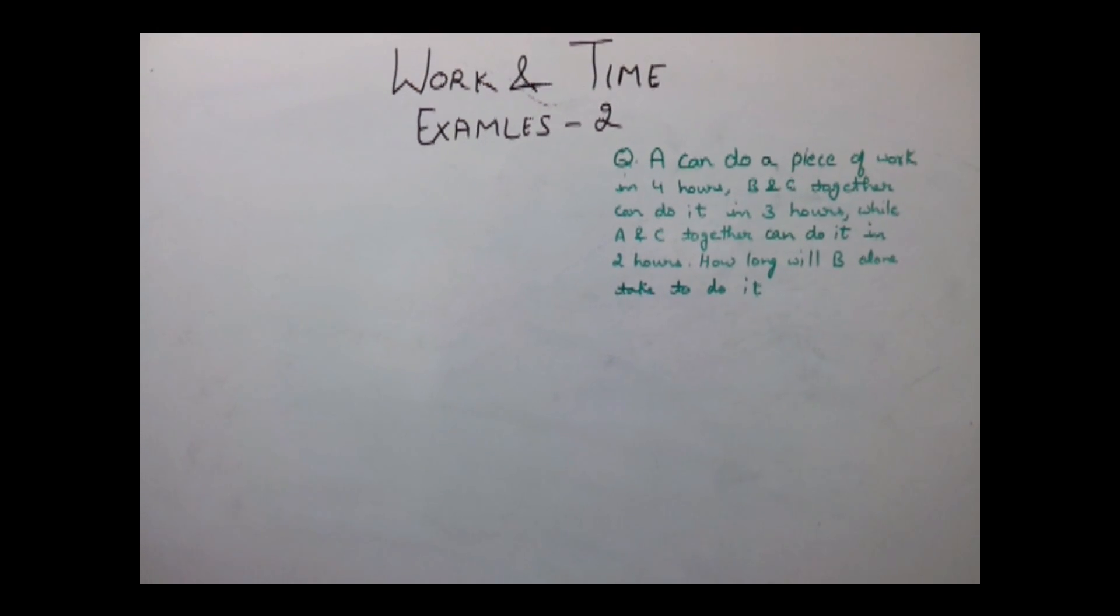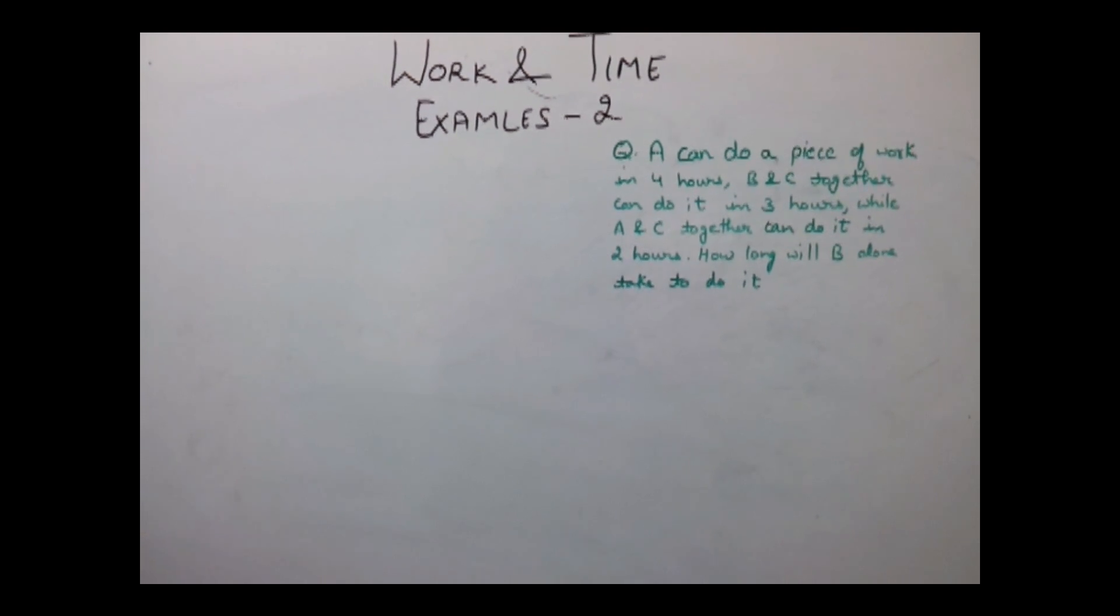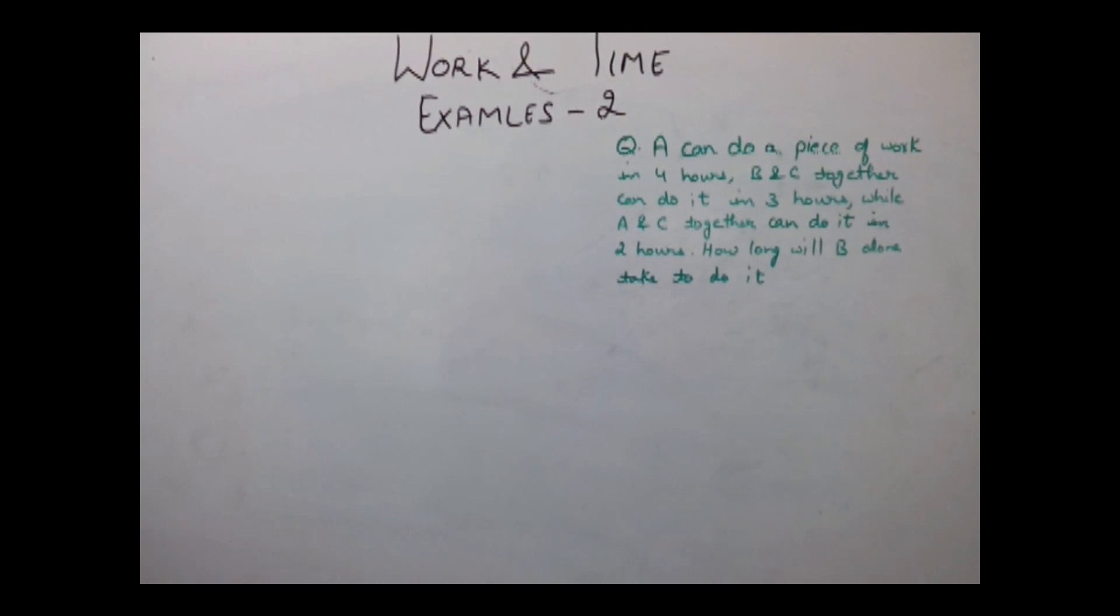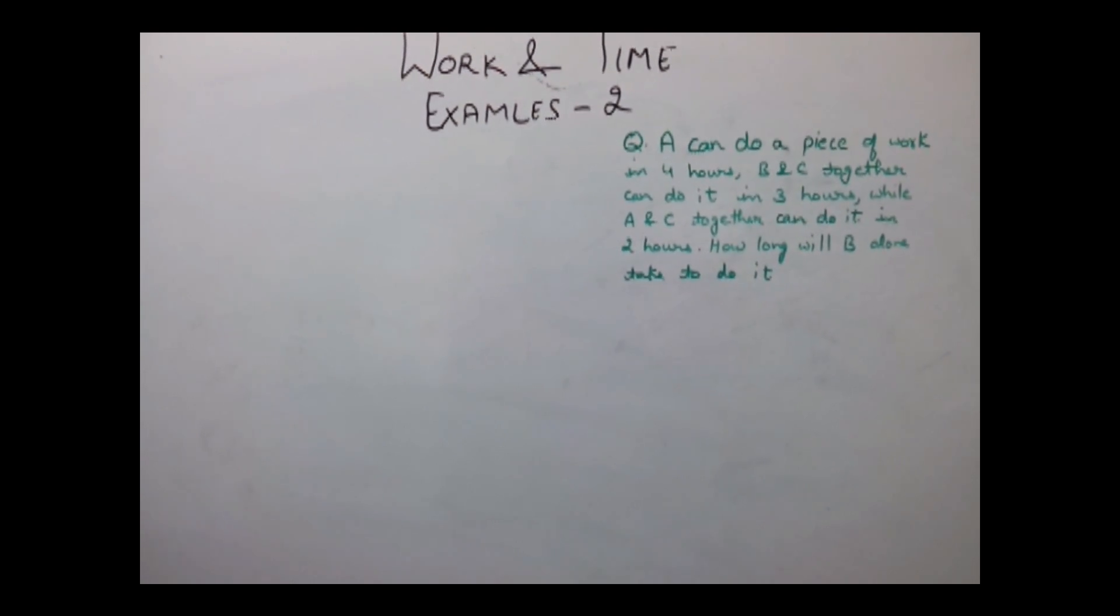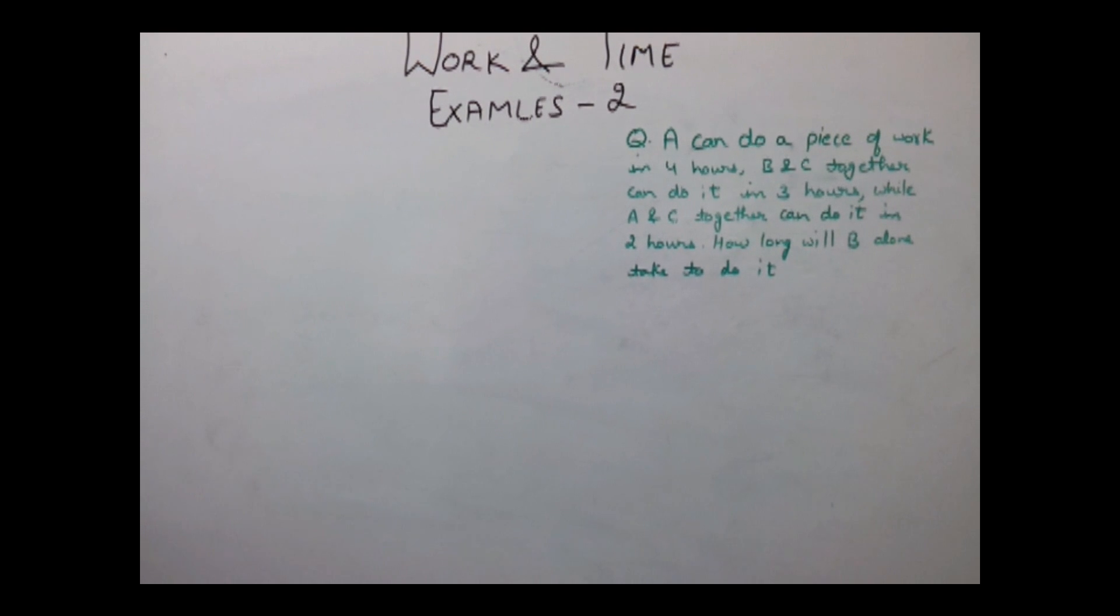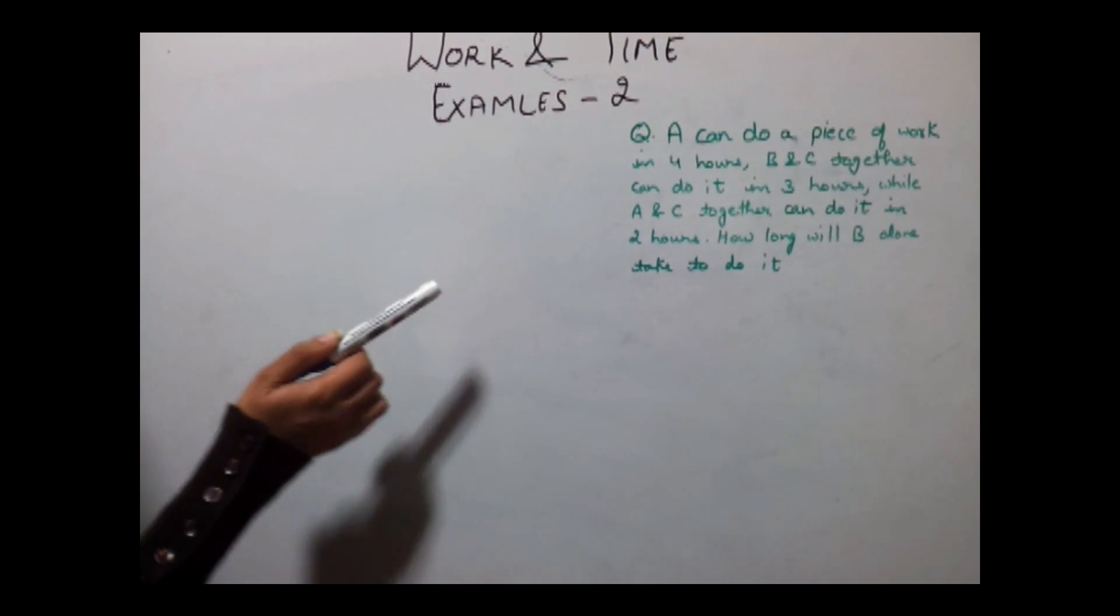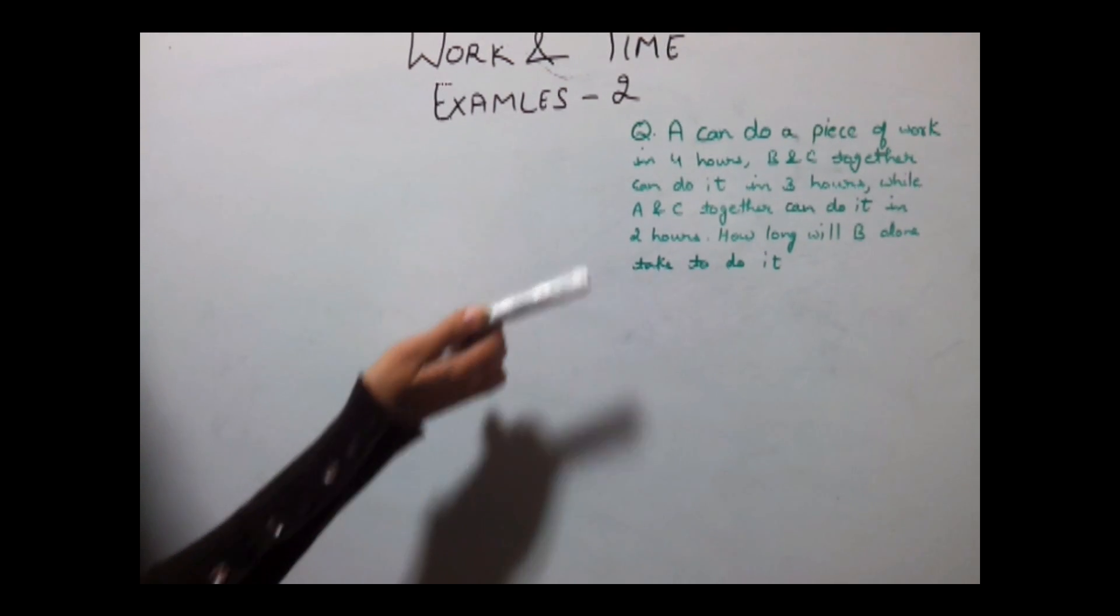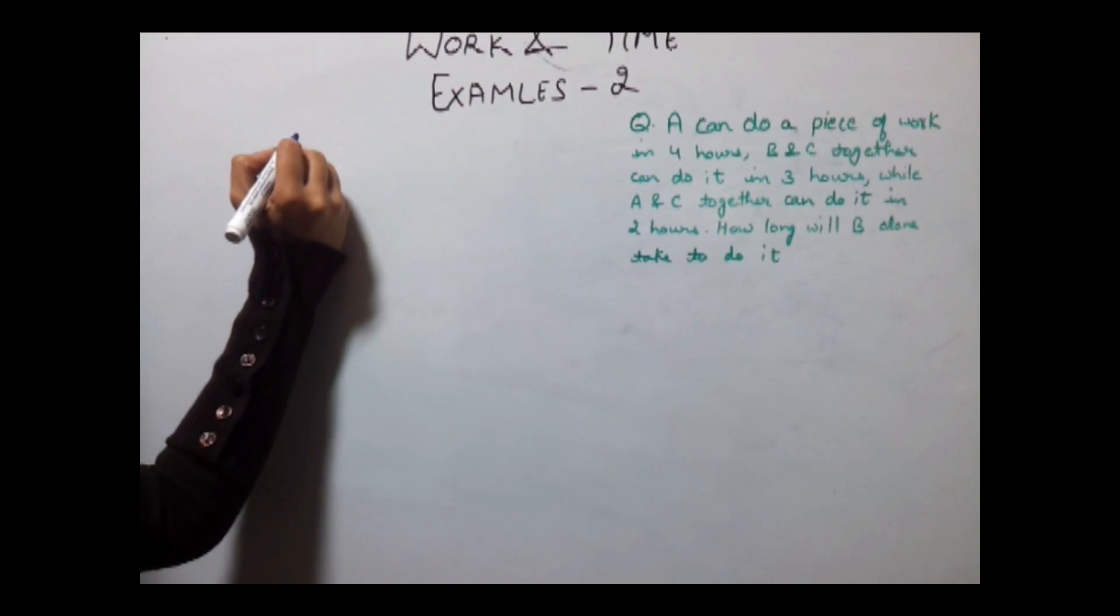Next example is: A can do a piece of work in 4 hours. B and C together can do it in 3 hours. While A and C together can do it in 2 hours. How long will B alone take to do it? In this question, first of all we will find out how much work they can do in 1 hour.